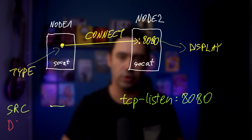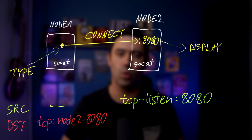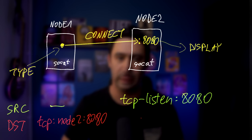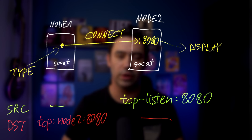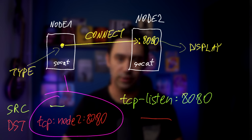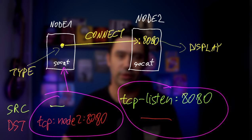As the destination on the first instance, we put TCP-node2-8080 to indicate whatever we receive should be sent to node 2 on port 8080. As the destination on the second instance, we put dash for standard output. So the first instance has dash as source and TCP-node2 as target; the second has TCP-listen as source and dash as target.